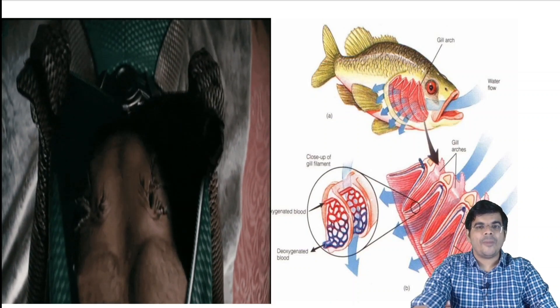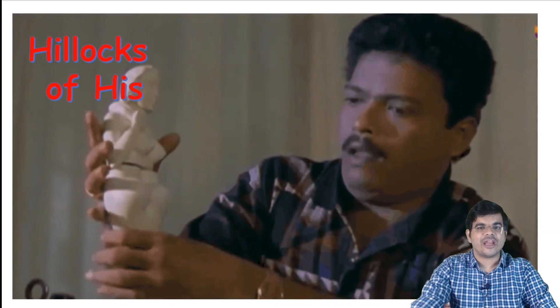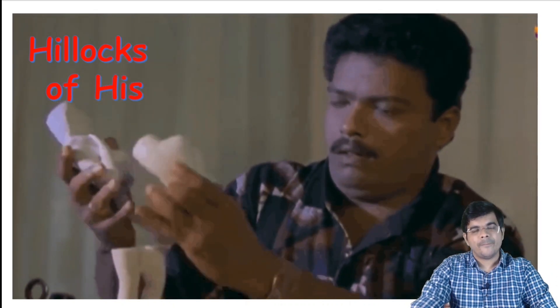The lower part of the first branchial arch and the upper part of the second branchial arch gives rise to six hillocks of His which fuse together at the sixth week of intrauterine life to give rise to the pinna.